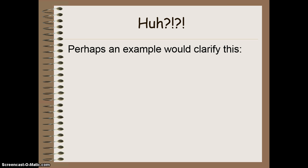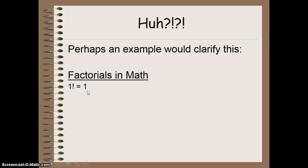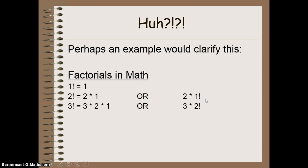Let's take a look at a mathematical example of recursion. This example will be factorials in math. We all know that 1 factorial is 1. But if I try to make this problem a little bit more complex, I can say, what's 2 factorial? Well, 2 factorial is 2 times 1. I can rewrite this as a simpler version by saying 2 factorial is 2 times 1 factorial. Moving up, 3 factorial is 3 times 2 times 1, or I can simplify this by saying 3 factorial is 3 times 2 factorial, which I can solve by saying 2 factorial is 2 times 1 factorial, which is 1.